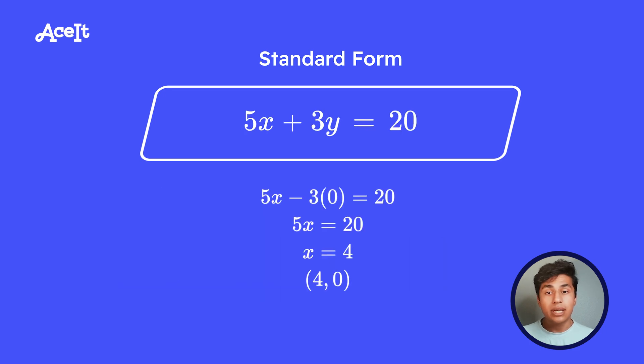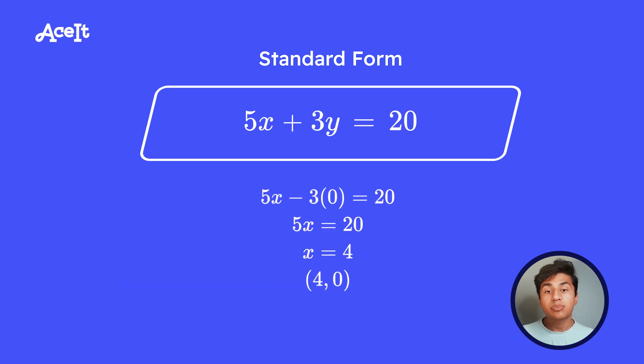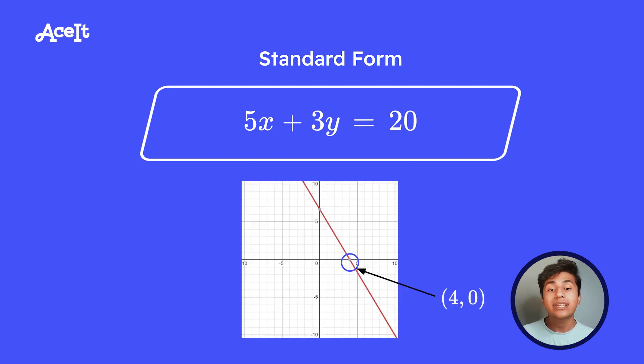So let's take a look at this example here. We have 5x plus 3y is equal to 20. So if we set y equal to 0, we're going to be left with 5x equals 20, and then we solve for x by getting x equals 4. So that means the x-intercept is going to be at (4, 0). And if we look at the graph of this equation, we can see that the x-intercept is at (4, 0).